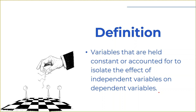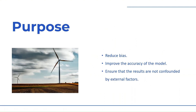A control variable is one that has some effect on the dependent variable. The purpose of using control variables is to reduce bias. On the other hand, you can say it improves the accuracy of the model. In SmartPLS or structural equation modeling, we need to enhance the model accuracy.